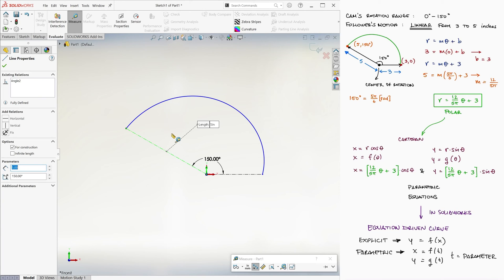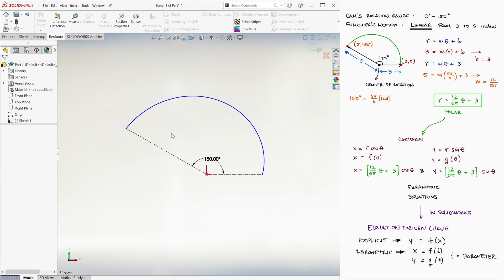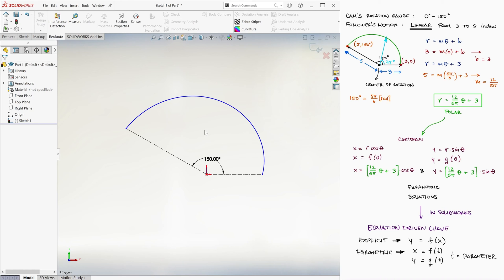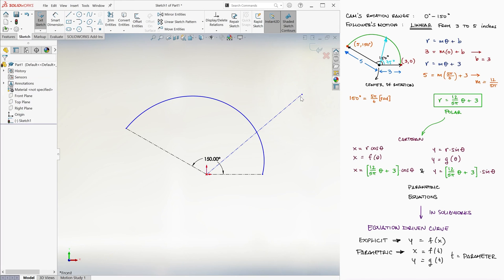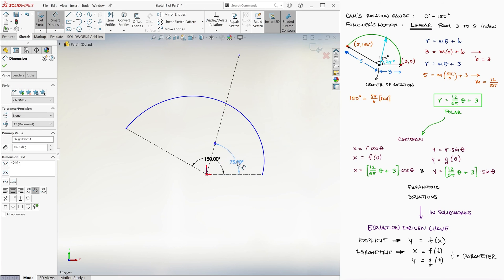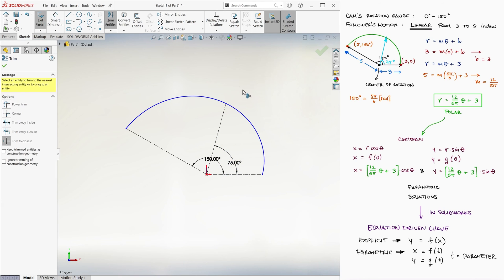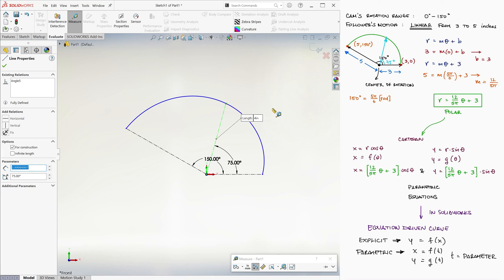We can even check for any other values of theta. For example, if this is in fact a linear relation, which is what we wanted, right at the middle between 0 and 150, meaning 75 degrees, the distance from the origin should be right at the middle between 3 and 5, right? We create a centerline, we angle it at 75 degrees, we trim the excess, and we measure it. And voila, it's 4 inches. And there you have it.